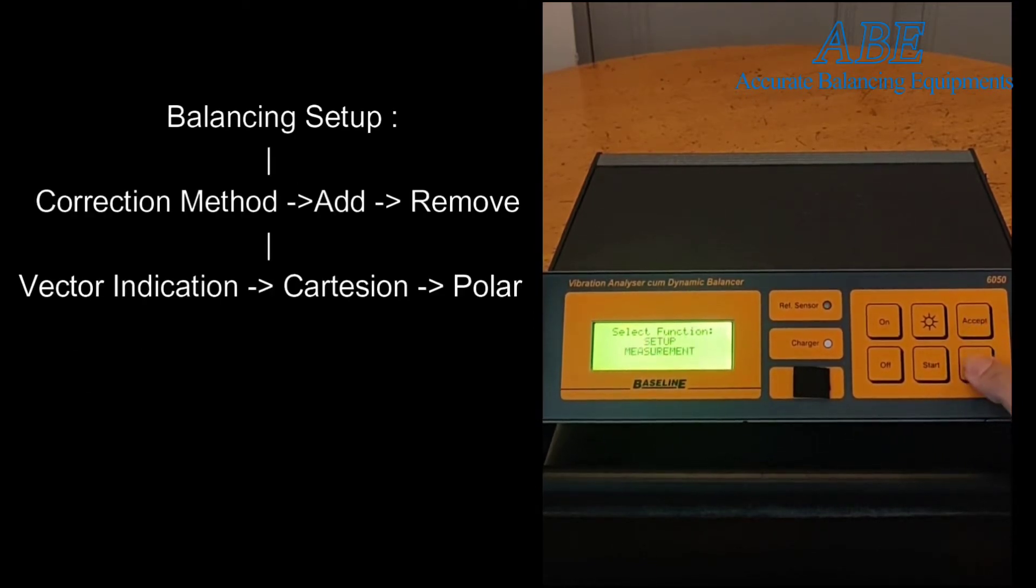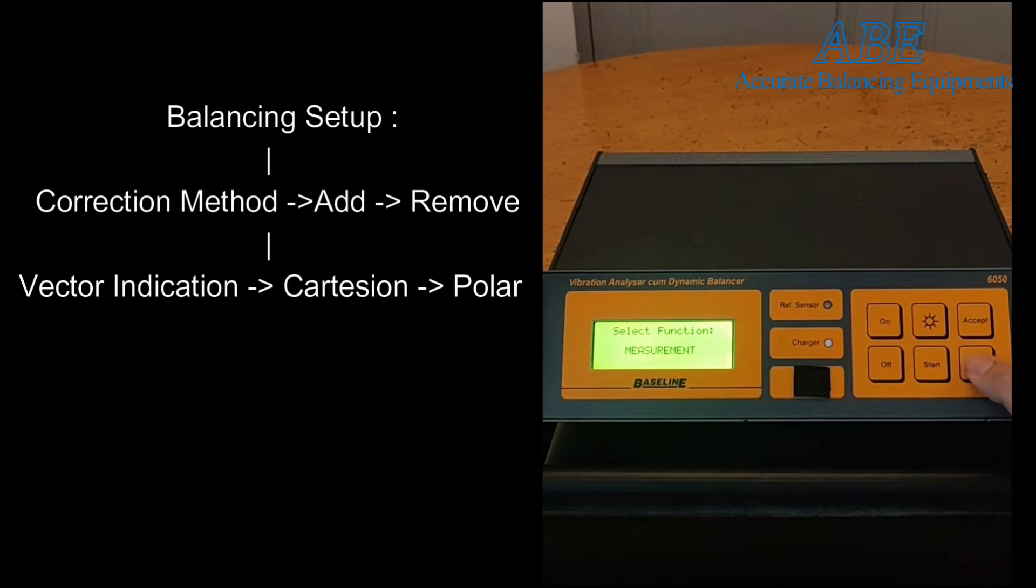Inside balancing setup, there are two options available: correction method and vector indication. Correction method, addition or removal, can be selected for each plane, and vector indication can either be polar or cartesian.